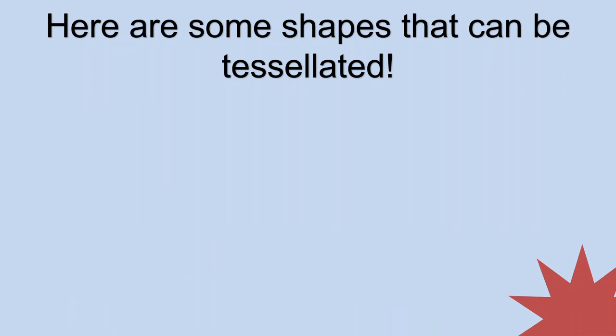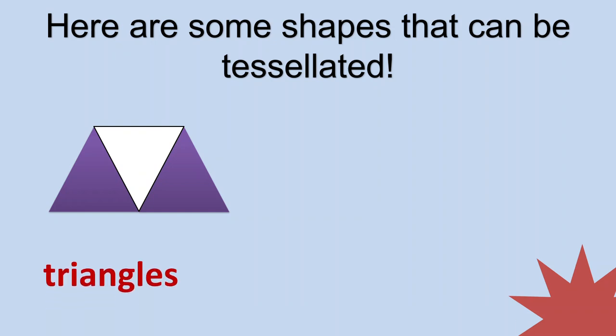Another shape that can be tessellated, we can use triangles, right? Just like our first example a while ago. We can use a hexagon. A hexagon has six sides. If we tessellate a hexagon, it looks like we form a honeycomb.